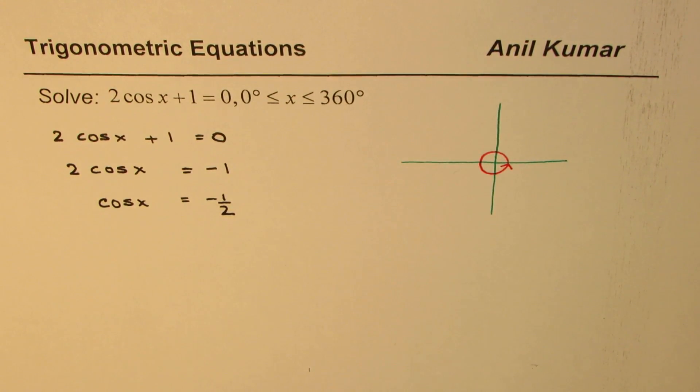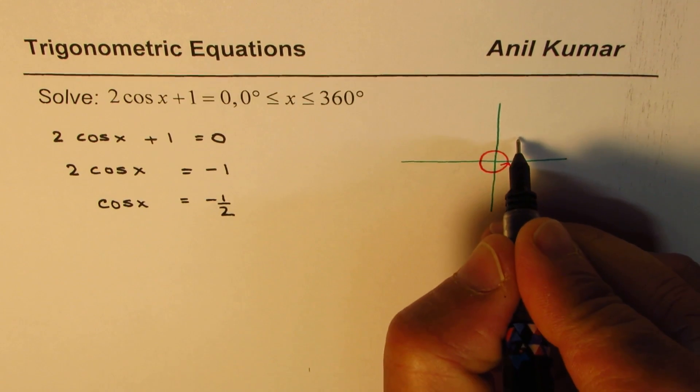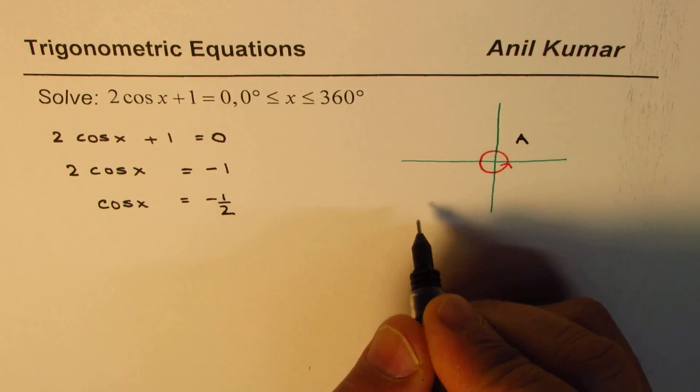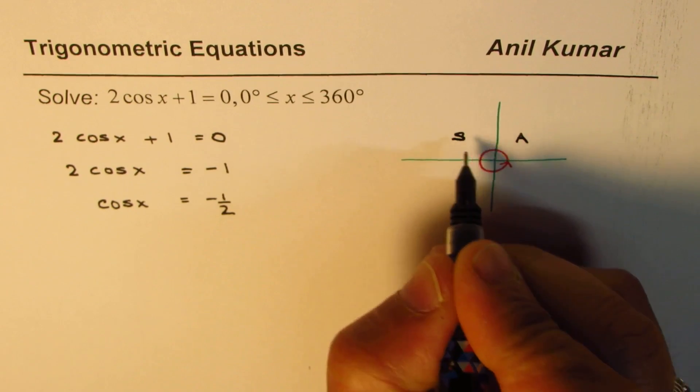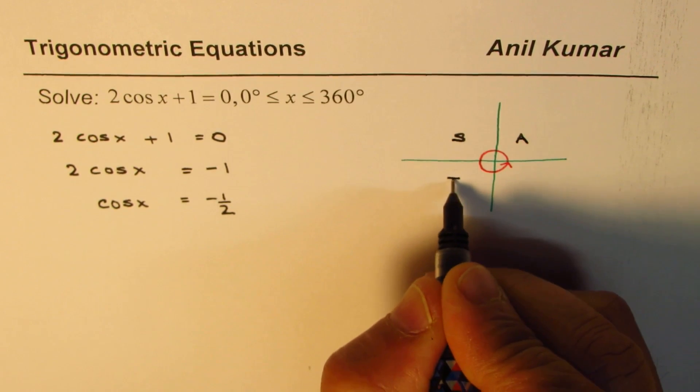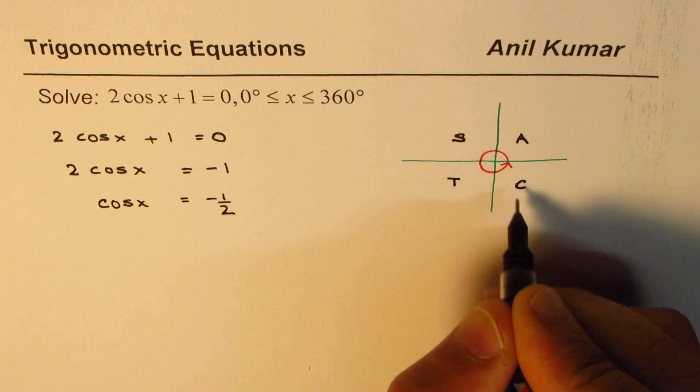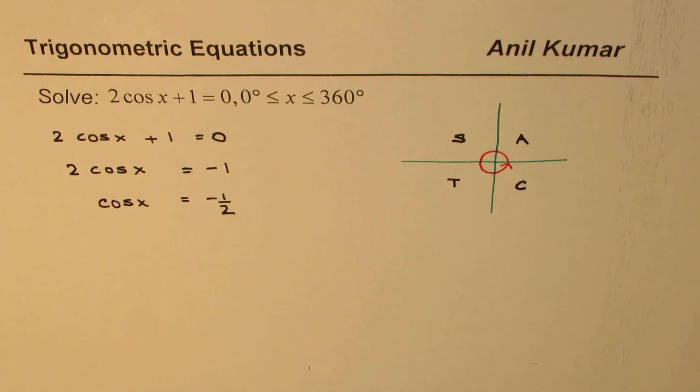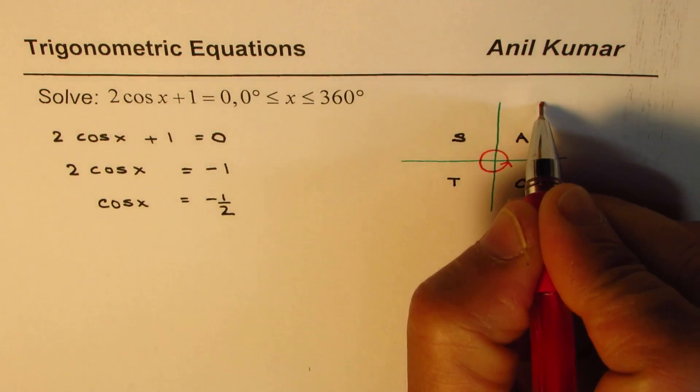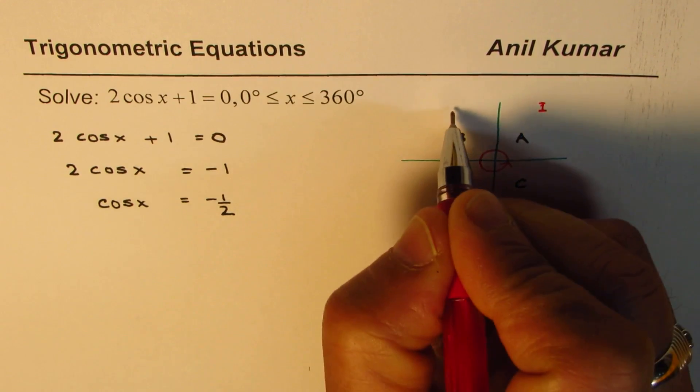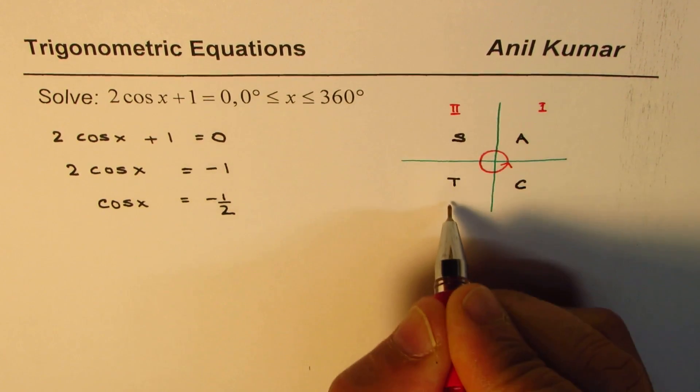Now when is cos negative? Well, all trigonometric ratios are positive in quadrant 1. Sine is positive in quadrant 2. Tan is positive in quadrant 3. And cos is positive in quadrant 4. So what I have written here is in which quadrant which trigonometric ratio is positive.